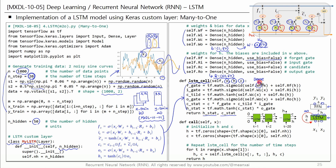Since WF is a dense layer, if you input X here, it will return the dot product of X and W plus B. Since RF is also a dense layer, if you input H here, it will return the dot product of H and R. The dense layer RF has no biases, so this is equivalent to this expression. The outputs of other gates are computed in the same way.